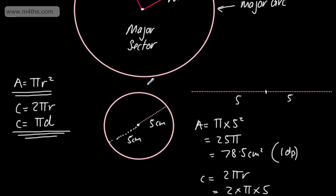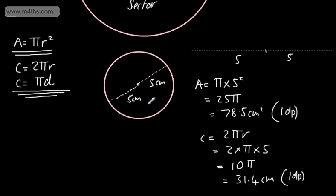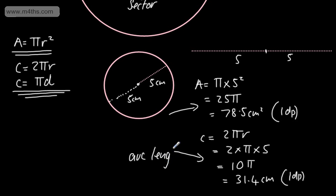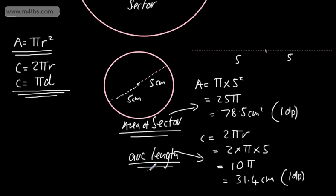So all we're going to use is these formulae. For the arc length, we use the arc length formula, and for the area of a sector, we use the sector area formula. Let's see these in action and work with some basic examples before moving on to more challenging ones.